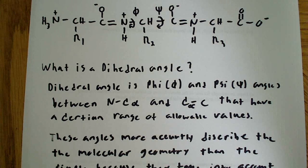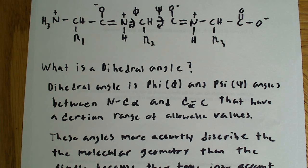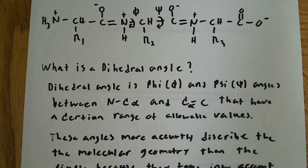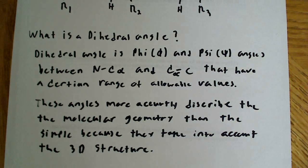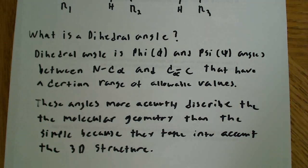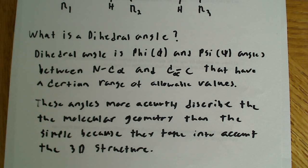So if I were asked, say, what are dihedral angles, and why are they more informative than simple angles, what I would say is, dihedral angles are phi and psi angles between the N and C alpha, and the C alpha and the C, that have a certain range of allowable values. So there's only a certain number of allowable values. And these angles more accurately describe the molecular geometry than simple angles, because they take into account the 3D structure.